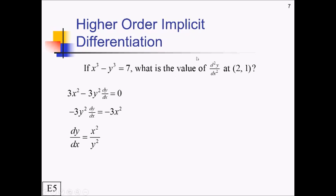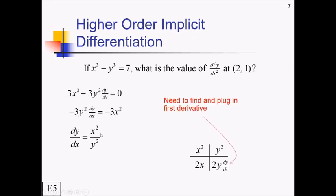Now we need the second derivative, which requires the quotient rule. Setting up with numerator x² and denominator y²: their derivatives are 2x and 2y(dy/dx) respectively. Rather than expand a full formula, I'll plug in the point (2, 1) directly. First I need dy/dx at (2, 1): that's 2²/1², which is 4.